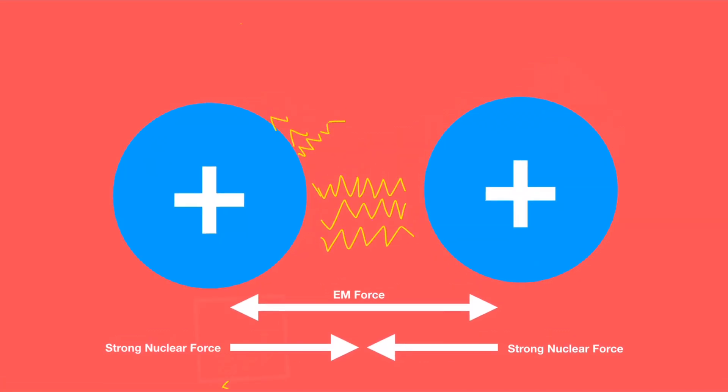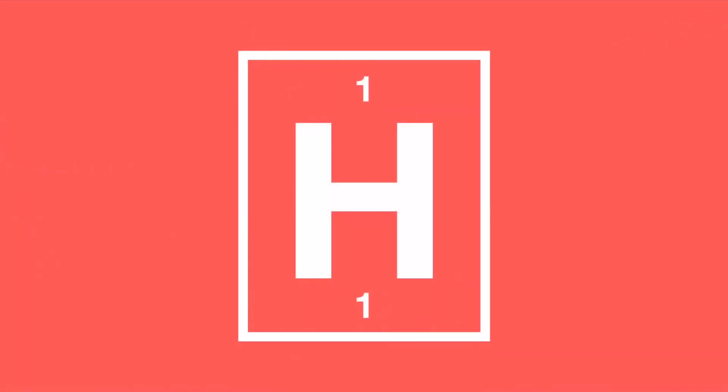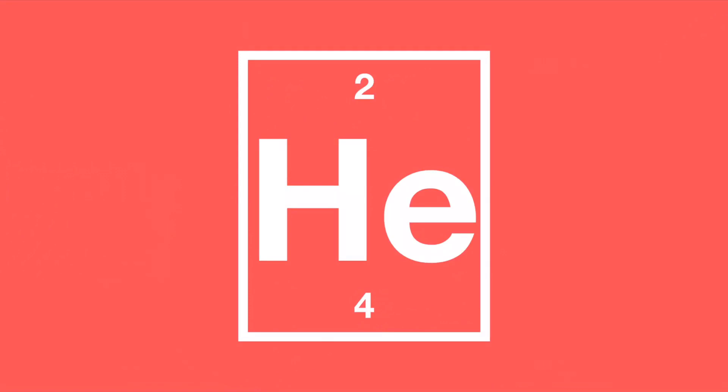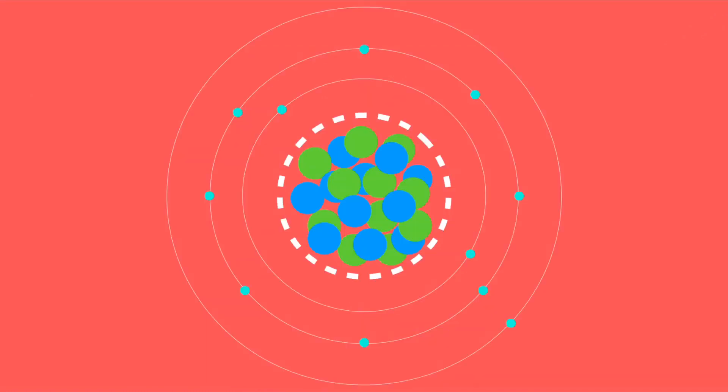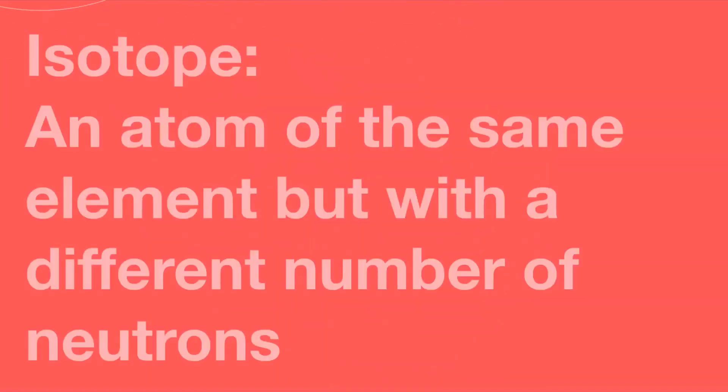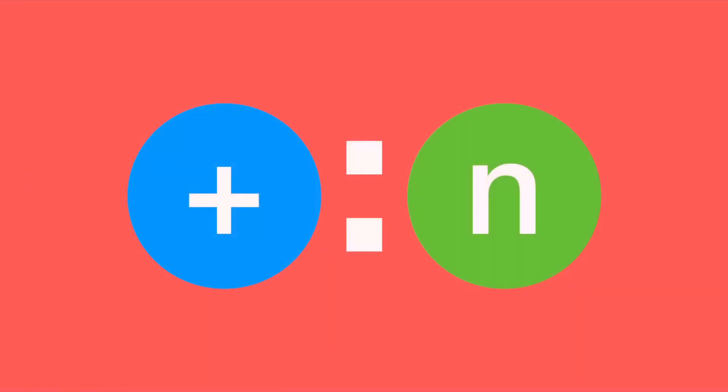This actually also explains why, as the proton number increases, the number of neutrons increases as well. With that knowledge, we can now start talking about different forms of radioactive decay, and maybe it becomes clear why some isotopes of elements are unstable. Their ratio of neutrons and protons doesn't allow for optimal attraction, and so every so often they release a form of radiation to become more stable.